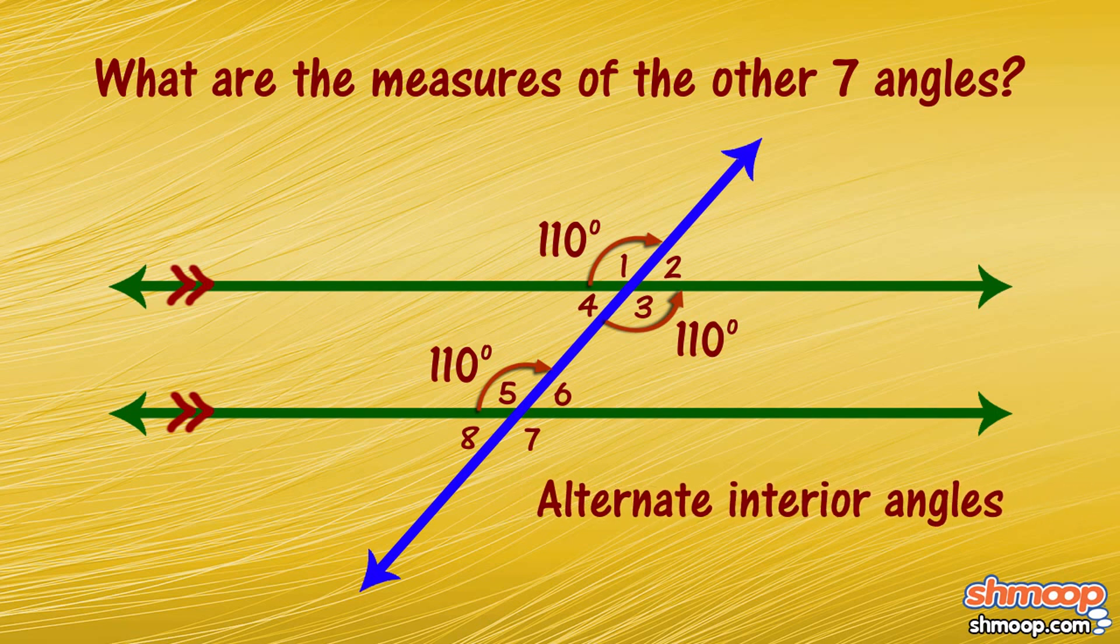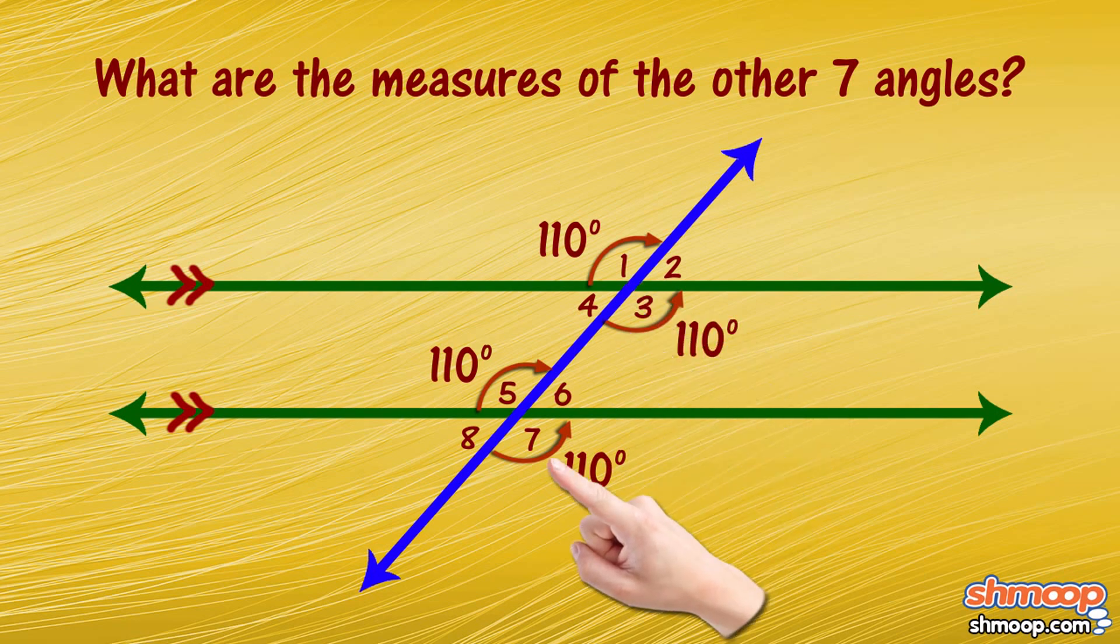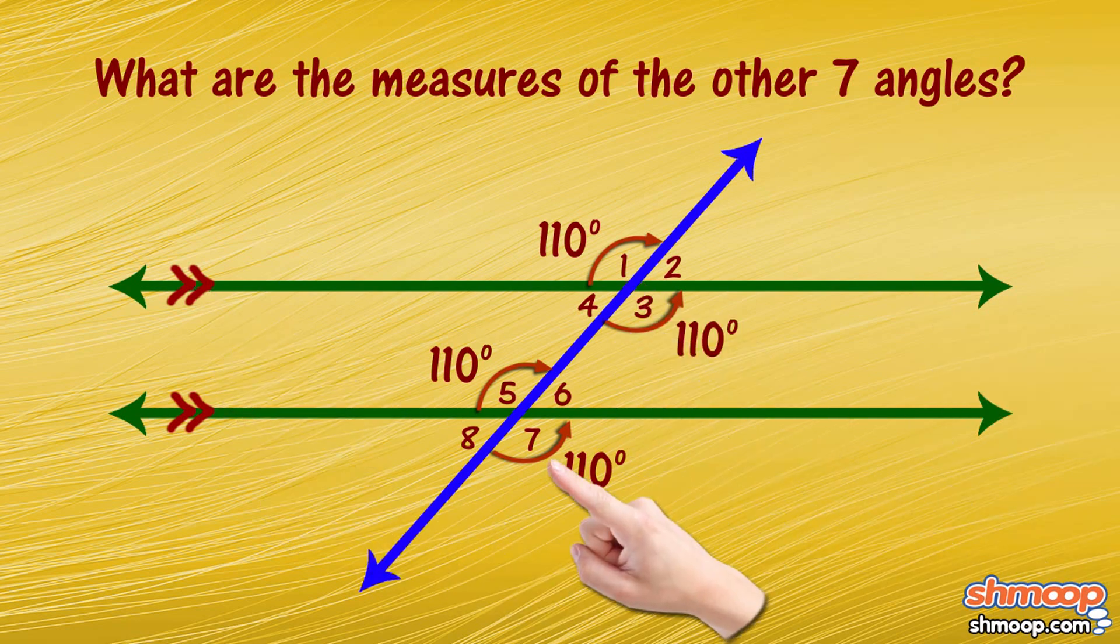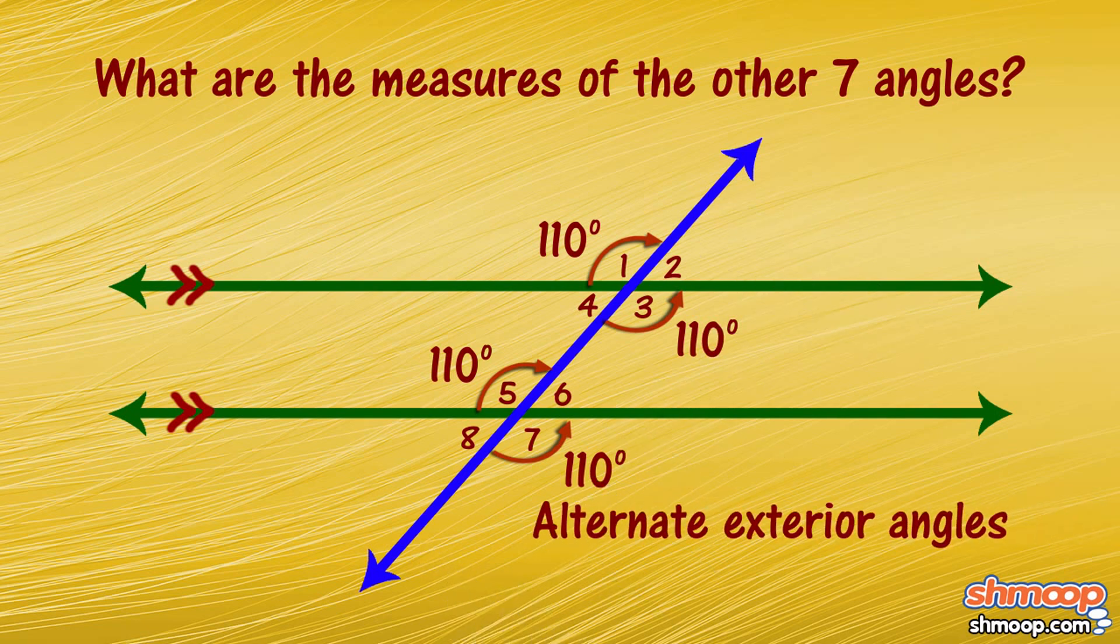And there's one more angle that's 110 degrees, and that's angle seven. So angle one and angle seven are both on the exterior of the parallel lines and alternate sides of the transversal, and they're called alternate exterior angles.